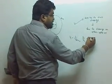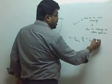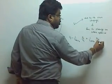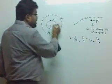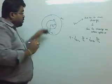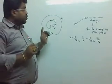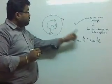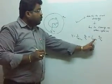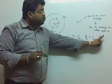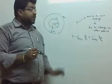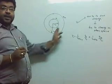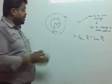Plus 1 over 4 pi epsilon-naught, Q2 over R2. The potential due to the outer sphere charge Q2 at the inner sphere is 1 over 4 pi epsilon-naught, Q2 over R2. This gives the total potential for the inner sphere.